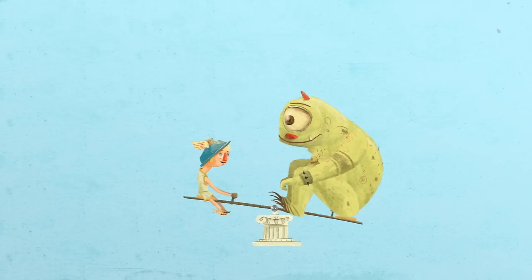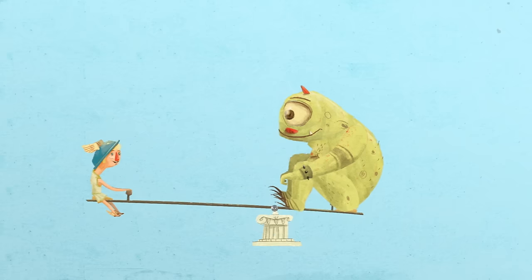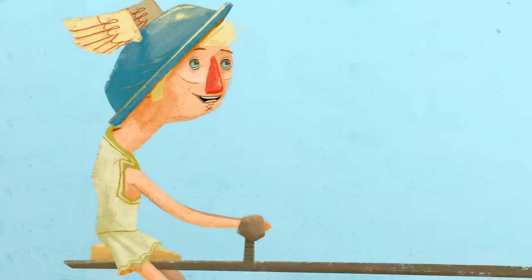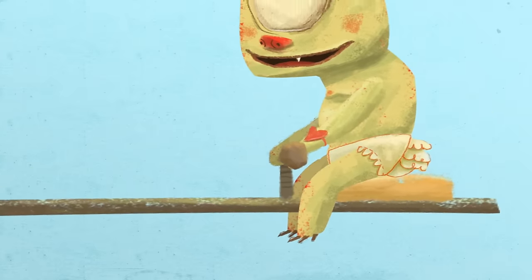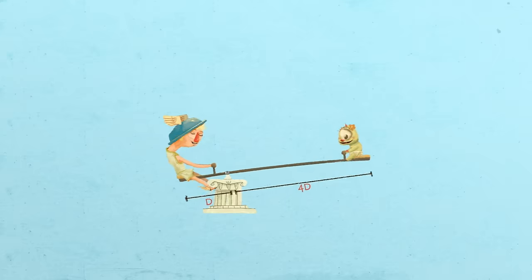So if your friend weighs twice as much as you, you'd need to sit twice as far from the center as him in order to lift him. By the same token, his little sister, whose weight is only a quarter of yours, could lift you by sitting four times as far as you.